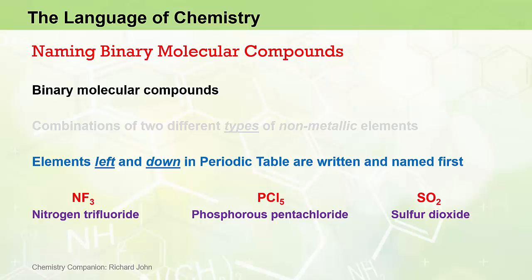For example, with nitrogen trifluoride, NF3, nitrogen lies to the left of fluorine in the periodic table, so we write and name nitrogen first. For phosphorus pentachloride, PCl5, phosphorus lies to the left of chlorine, so we write and name it first. For sulfur dioxide, SO2, sulfur and oxygen are in the same group, but since sulfur lies below oxygen in the periodic table, we write and name sulfur first.